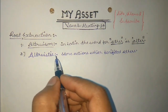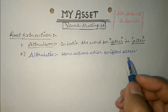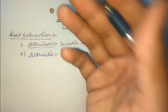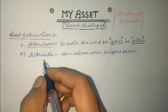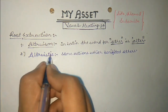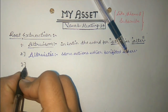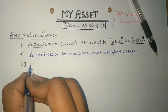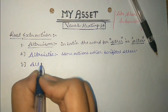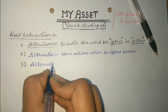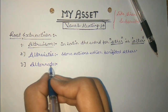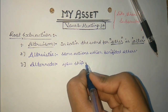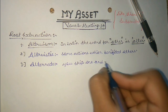Altruistic means some action which benefits others. In our modern time you can't even find a person who works for others, but this word is very useful from an exam point of view. The third word built on the same Latin root alter is 'alternate.' The meaning is clear — you skip one and take the other.